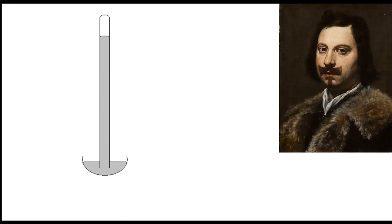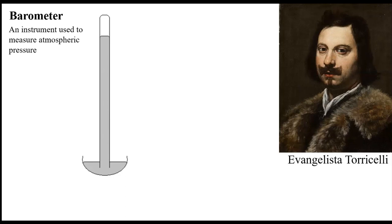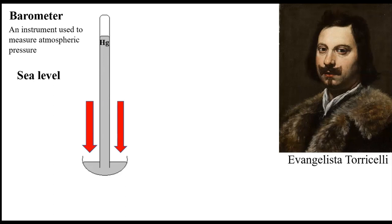People have been studying this for a long time. The person who invented the barometer is an Italian named Torricelli, back in the 1600s. He invented the barometer, a device used to measure atmospheric pressure. His barometer was essentially a pan of mercury with a tube of mercury turned upside down in the pan. At sea level, atmospheric pressure pushes down, which pushes the mercury column upward.